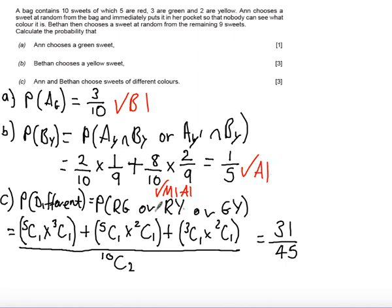And then part C we get a method mark and an answer mark for the correct use of combinations. There is an alternative way but I've chosen to use combinations. And then an answer mark if you've got a 31 over 45. Okay. Well I hope that all made sense and you were able to follow the solution and how to mark it.